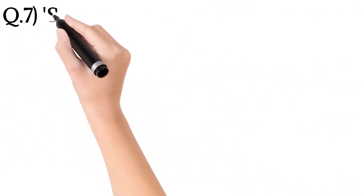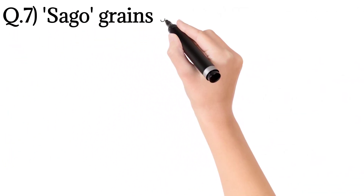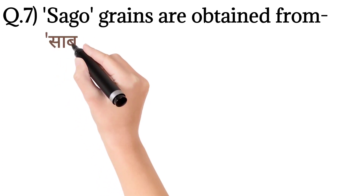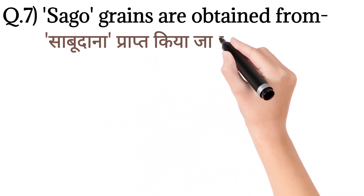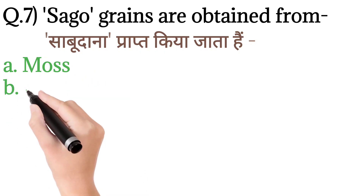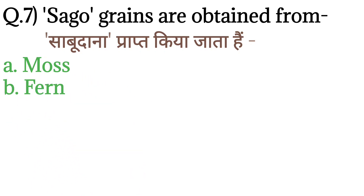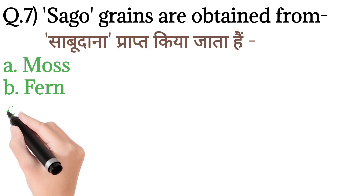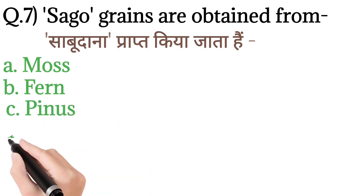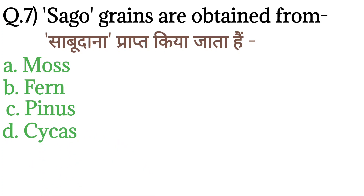Question number 7: Sago grains are obtained from — sago dana prapt kiya jata hai, kis se? Option A: Moss. Option B: Fern. Option C: Pinus. And option D: Cycas.